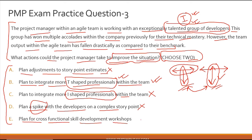Option E: plan for cross-functional skill development workshops. This is a strong option — you acknowledge you have I-shaped members who lack T-shaped skills, so you arrange cross-functional workshops where they learn how testing, financing, scheduling, and the full supply chain of project delivery works. This adds T-shaped knowledge to I-shaped individuals. So options B and E are both correct. Options A, C, and D are incorrect — the correct answers are option B and option E.